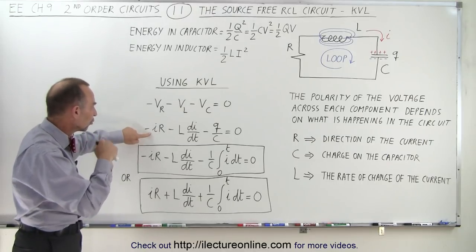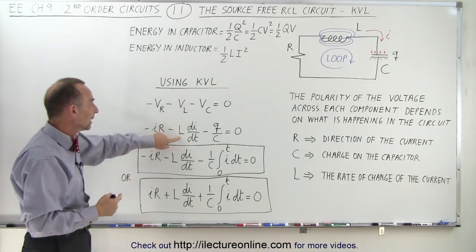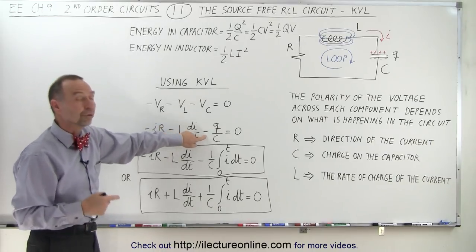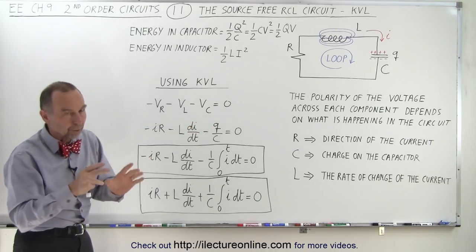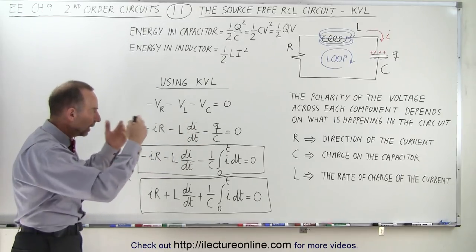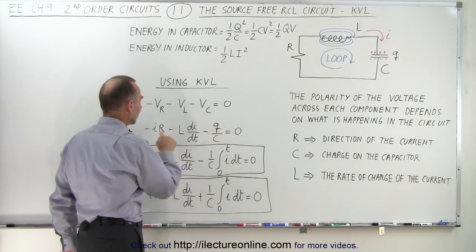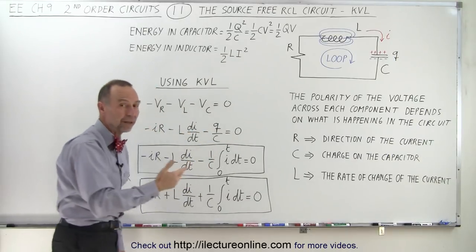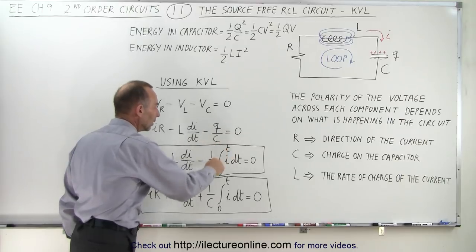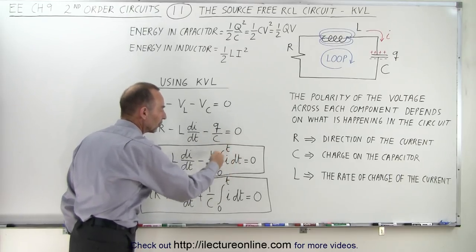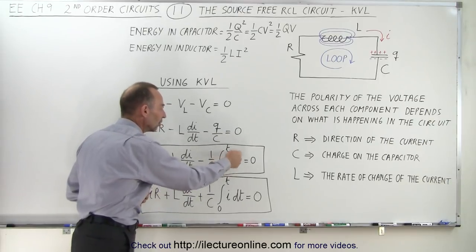So if we say that the voltage drop across the resistor must be the product of the current times the resistance, the voltage drop across the inductor will be the inductance times the rate of change of the current with respect to time, and the voltage drop across the capacitor will be the charge on the capacitor divided by the capacitance. Instead of writing Q over C, because Q will be a function of time but we have current in the other terms, it's better that every term in the equation is a function of current. So Q can be replaced by the integral from zero to T of I dt — this integral computes how much charge has been placed on the capacitor from zero to T, so it actually replaces Q.